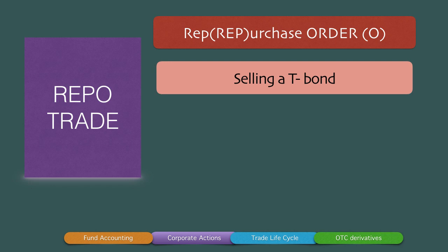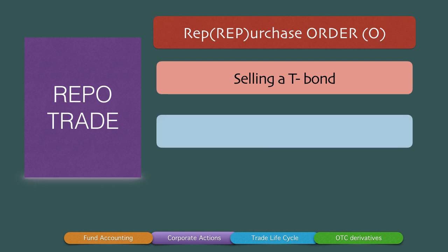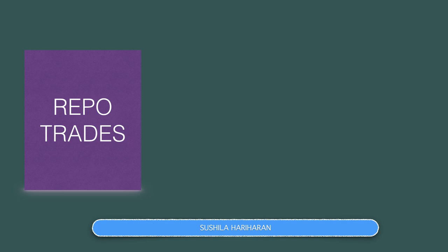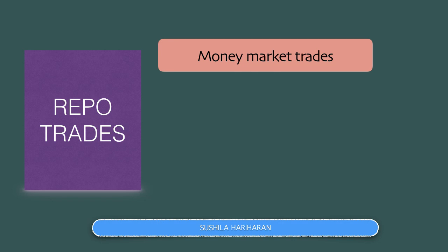Repo trades involve two tranches. As the name suggests, it involves selling an instrument and buying back that instrument — in this case, selling a Treasury bond or a government security and buying back the same security at a locked-in price. This is akin to borrowing and repayment of a principal amount of a loan. Repo trades are money market trades, and in fact a majority of trades in the money markets are repo in nature. These repo trades involve two legs: one leg involves selling the security and the second leg — for which the price is locked in — is buying back the security by the seller.